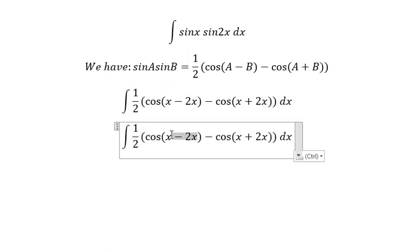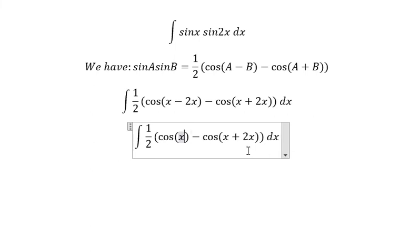This one you get negative x. Cosine of negative x equals cosine x. x plus 2x gives you 3x.